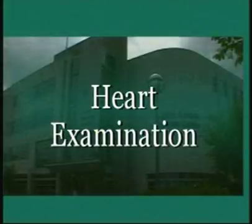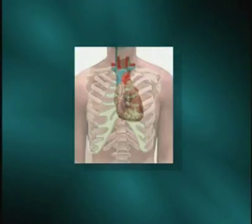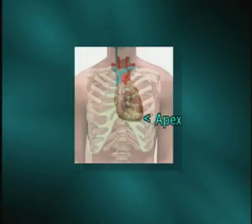Let's now review some surface anatomy relative to the heart. The heart lies in the mediastinum, deep to the sternum. It also lies to the left of the midsternal line at approximately the third to the sixth costal cartilages. The base of the heart is just inferior to the sternal angle. The apex of the heart, or the tip of the left ventricle, lies at or just medial to the midclavicular line at the fourth or fifth intercostal space.